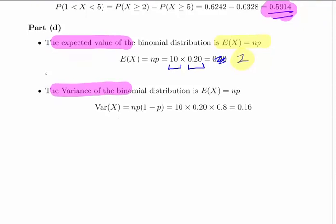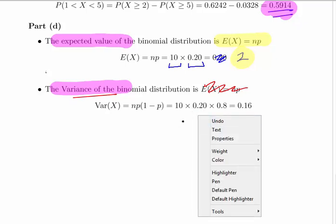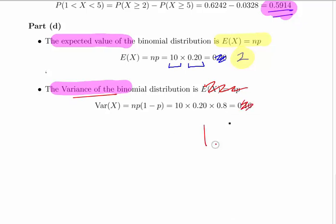The variance is calculated as follows: it's n times p times (1 minus p). That's 10 times 0.2 times 0.8, and that should give us 1.6.